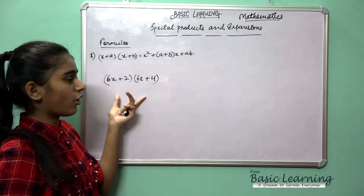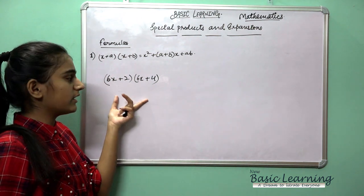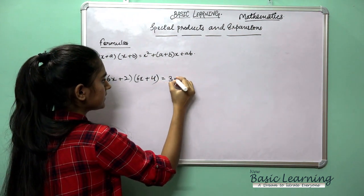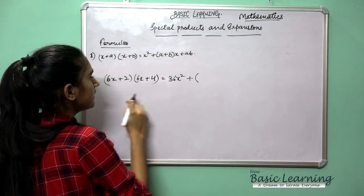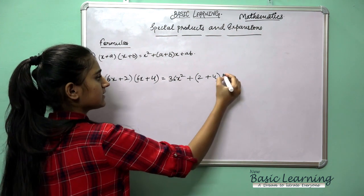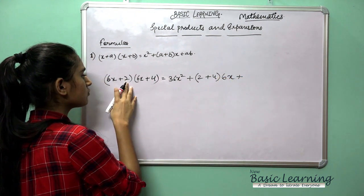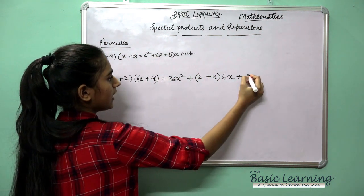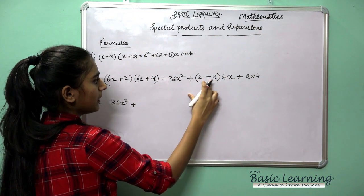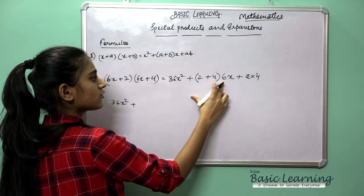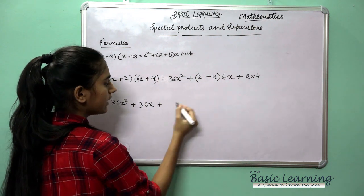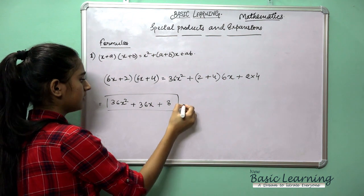This is not very difficult to solve. According to the formula you can apply it and easily solve these questions. Let's put the values: 6 times 6 is 36, and x times x gives x square, so 36x square. Then a is 2 and b is 4, so a plus b is 6, and 6 times 36x gives 36x coefficient. Finally a times b is 2 times 4 equals 8. So the final answer is 36x square plus 6 times 36x plus 8.